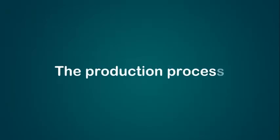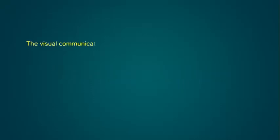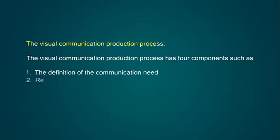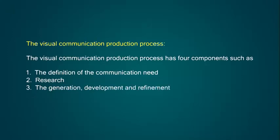The Visual Communication Production Process has four components: 1. The definition of the communication need, 2. Research, 3. The generation, development and refinement of ideas, 4. Production and evaluation.